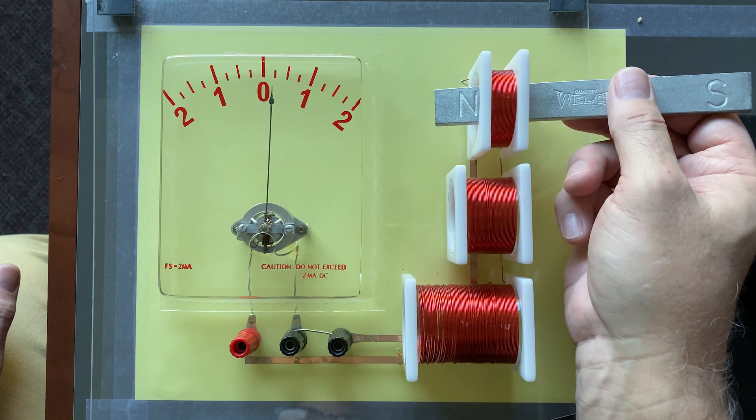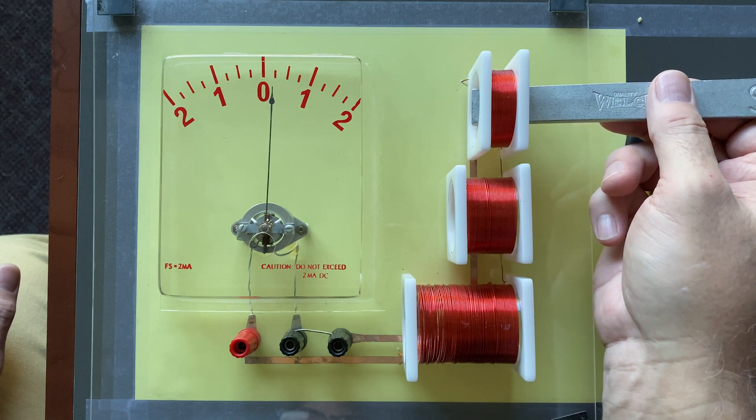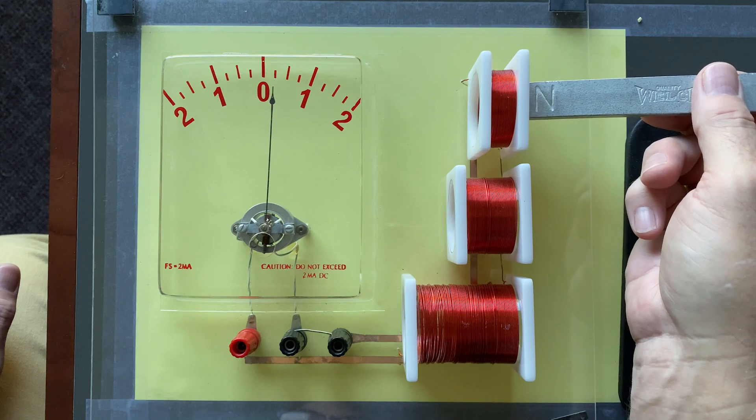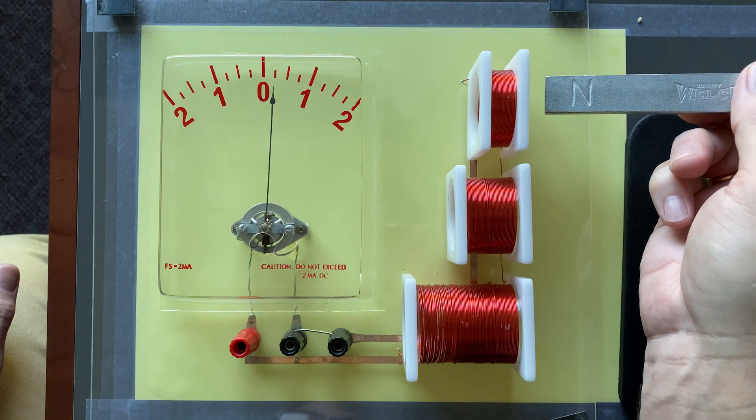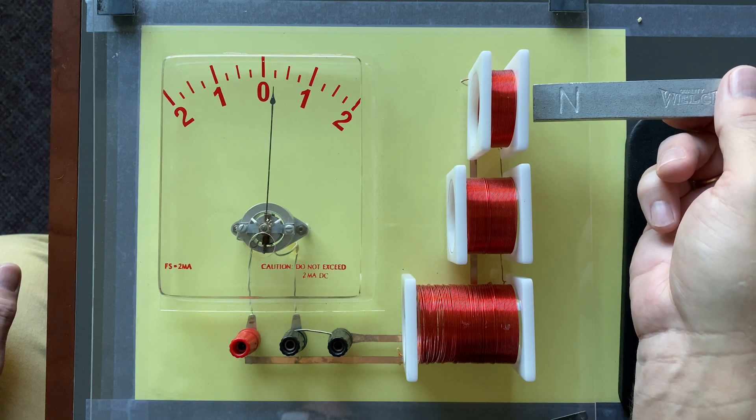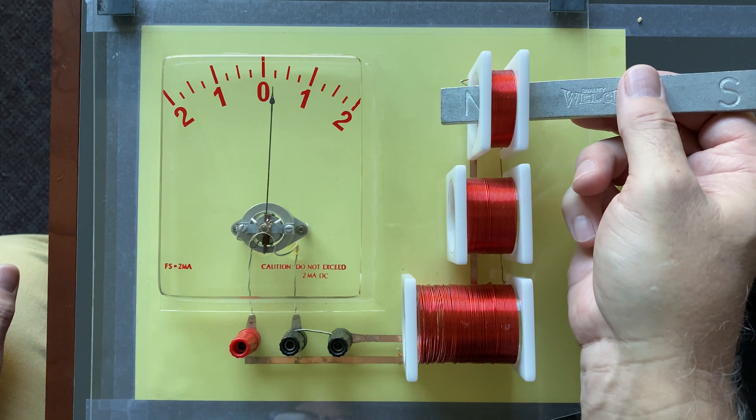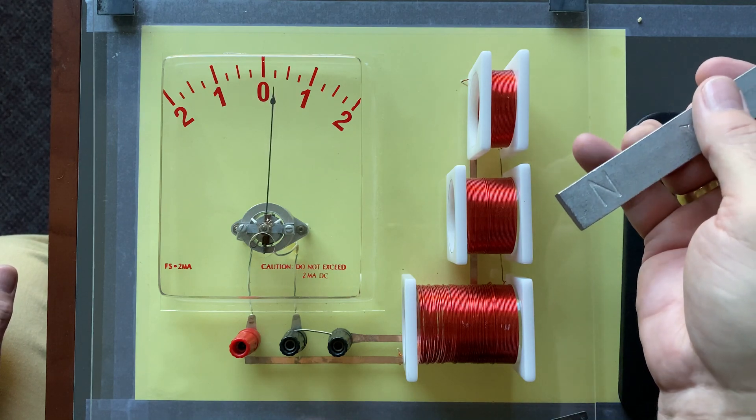But, you'll also notice, if I pull it out slowly, there's almost no deflection. In fact, I can see the needle wobble a little bit, but that's about it. So, once again, in fast to the right, out fast to the left.